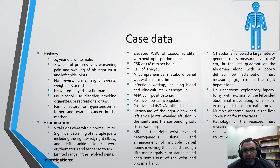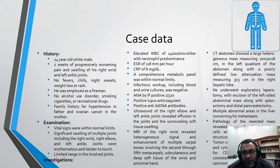He underwent exploratory laparotomy with excision of the left-sided abdominal mass along with splenectomy and distal pancreatectomy. Multiple abnormal areas in the liver were concerning for metastases. Pathology of the resected mass revealed sheets of malignant acinar cells with no intervening ductal structures or islets. Tumor cells were positive for trypsin and cytokeratin, and negative for CD117 and synaptophysin, consistent with pancreatic acinar cell carcinoma — a malignancy with metastases.